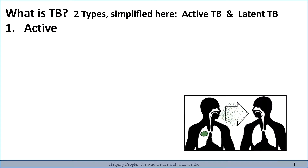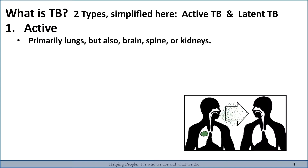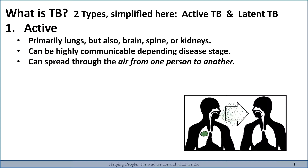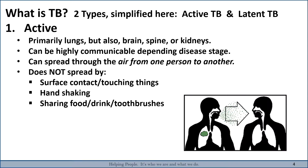There are two types of TB: active TB and latent TB. Active TB attacks primarily the lungs, but it can also spread to the brain, spine, or kidney. It's highly communicable depending on the disease stage, and can be spread through the air from person to person. It is not spread by surface contact, touching things, handshaking, or sharing food, drink, or toothbrushes. But it will result in a positive TB screening test.